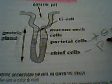Inside the gastric pit, we have the G cells, found at the top. Below that are the mucus neck cells. Inferior to the mucus neck cells are the parietal cells, and just inferior to those are the chief cells. These cells secrete acids and enzymes, including amylases, into the gastric pits and then into the greater stomach, allowing for digestion.